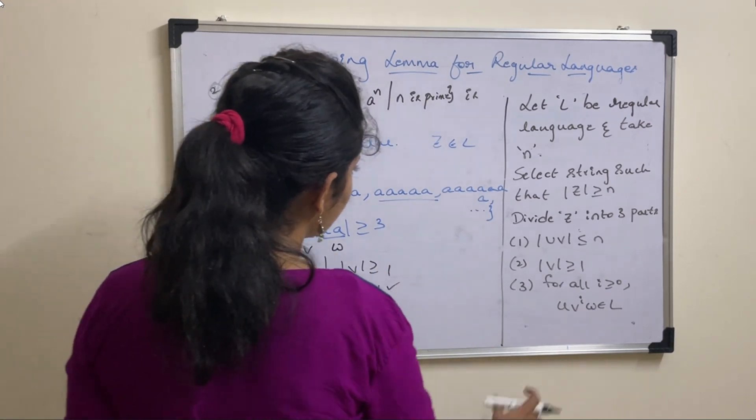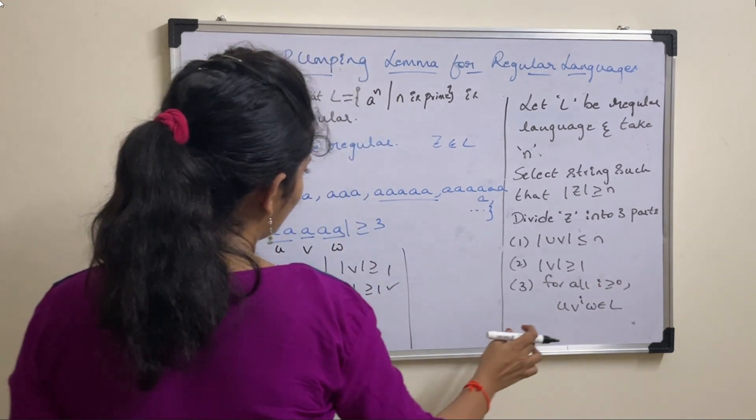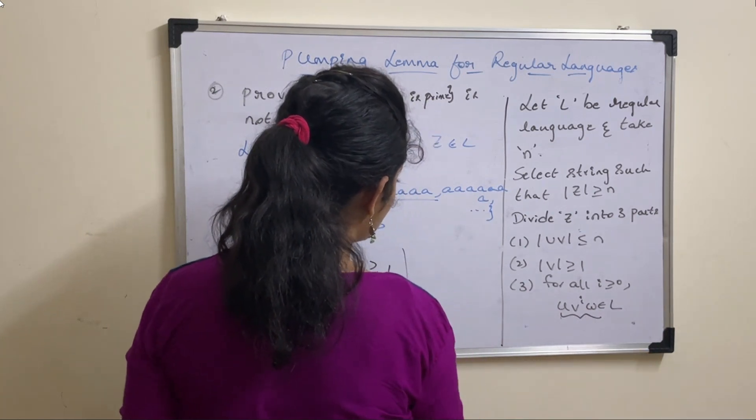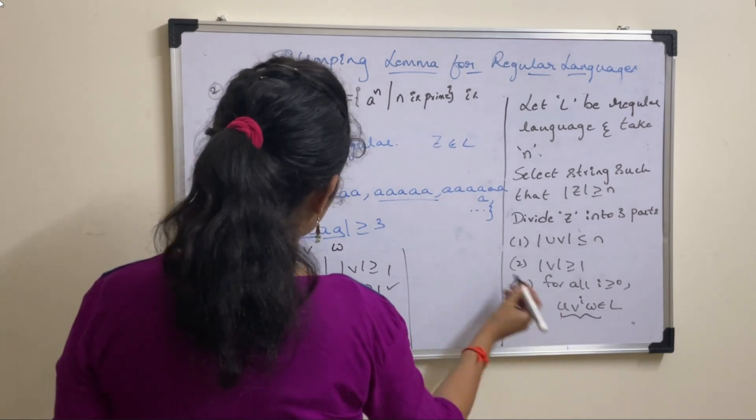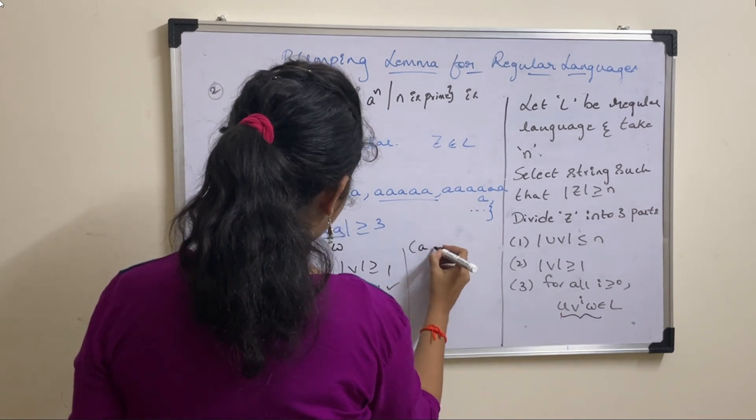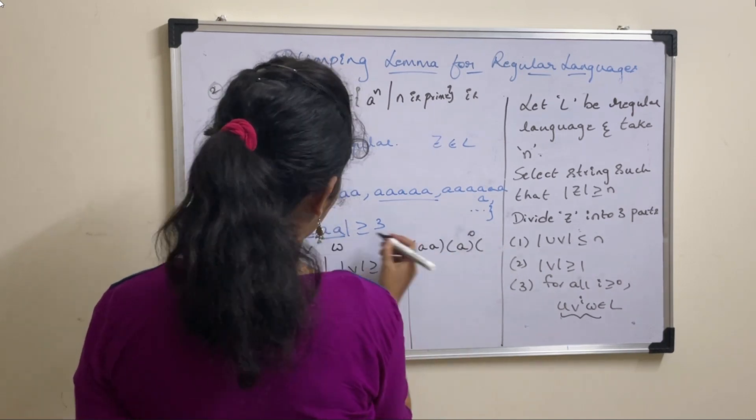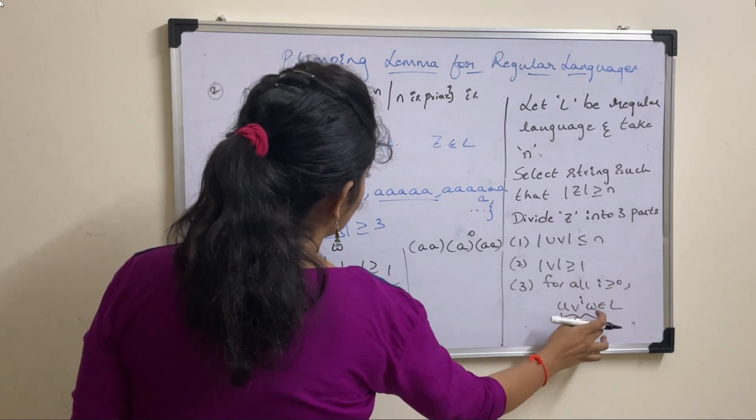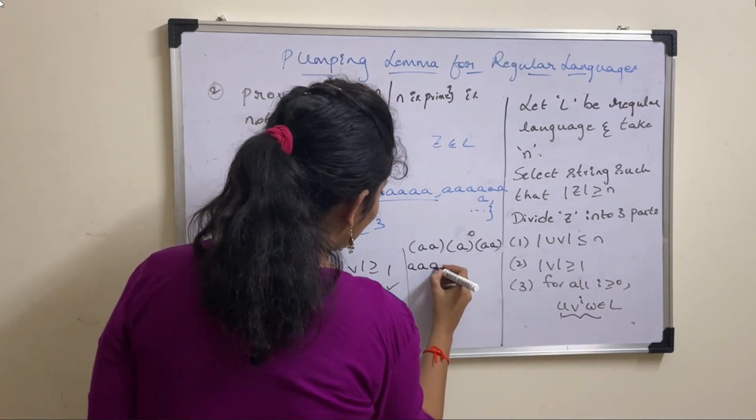Next, for all I greater than or equal to 0, you need to prove that this string does not belong to language. U is nothing but A. V means single A. Then W is also A. Check whether it belongs to L. So here it is A A.